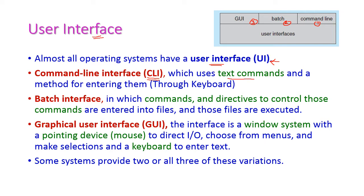In CLI, the input device is only the keyboard; a mouse cannot be used. In the batch interface, commands and directives to control those commands are entered into files, which are then executable files. The third type is the graphical user interface (GUI), which is a window system used in modern operating systems.